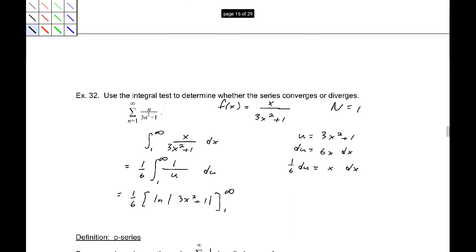Okay, taking the limit as x goes to infinity, this is infinity minus something, it doesn't really matter, it's going to be infinite. So that means therefore the sum from 1 to infinity of n over 3n squared plus 1 diverges.